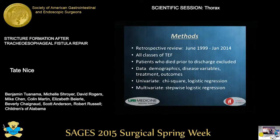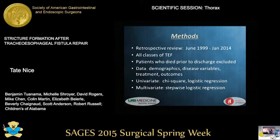This was a single institution retrospective review of patients who underwent esophageal atresia repair from June of 1999 to January of 2014. All classes of TEF were included; however, patients who died prior to discharge were excluded. Data were collected on patient demographics, disease specifics, treatments received, and patient outcomes. Univariate analysis for stricture formation used the Chi-square and logistic regression test, and a stepwise multivariate logistic regression model was then created.